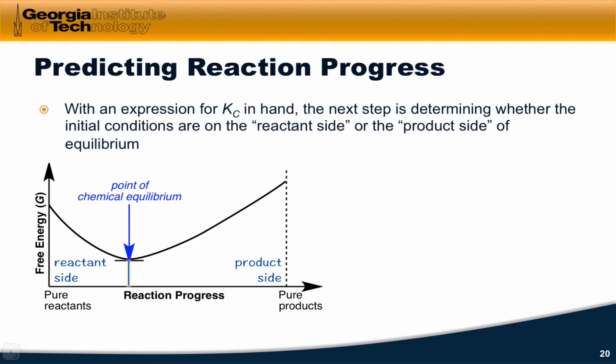So with an expression for Kc in hand, the next step is to determine whether the reaction will go forward or backward. That is to say, given our initial conditions, which side of the point of chemical equilibrium are we on?